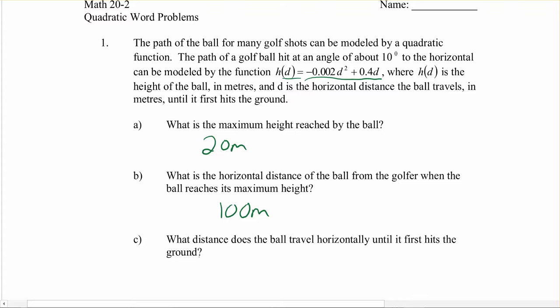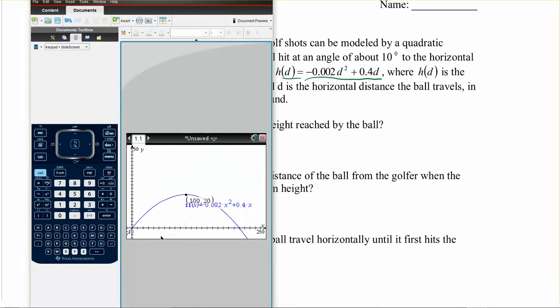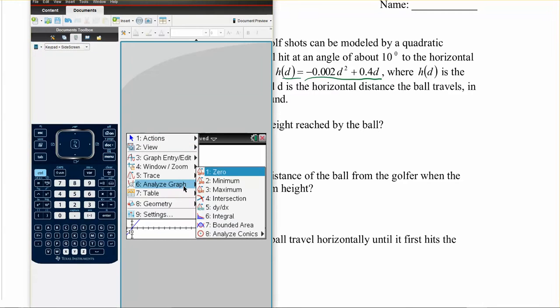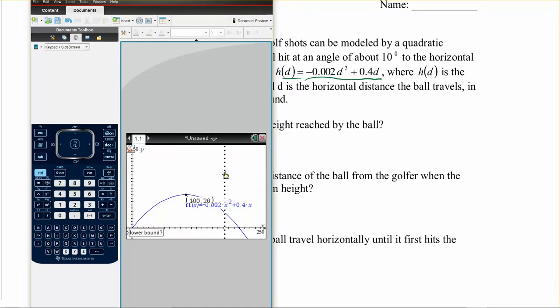And last one, what distance does the ball travel horizontally until it first hits the ground? So if I look at this again, you can kind of intuitively tell that it's going to be twice as much as that, right? If it's 100 right there, that's going to be right in the middle. This is going to be 200. But just to be sure let's check. That's going to be our X axis that we'll find. So if you want to find the X axis you go menu, analyze graph, and now it's called a zero, right? That's another name for the X axis. Sometimes it's called solution. So go zero.